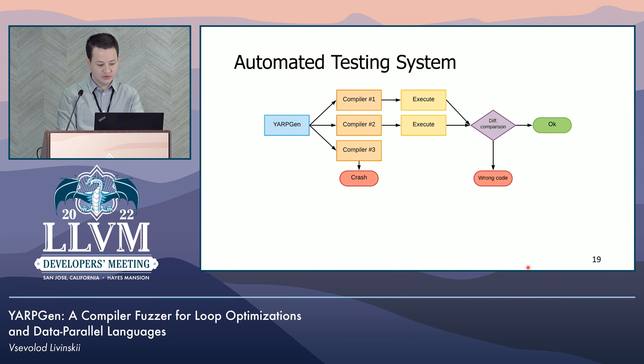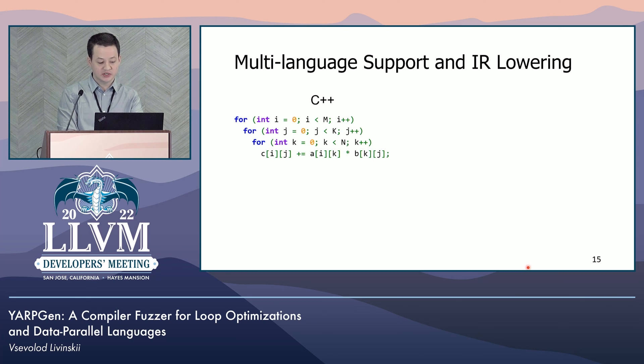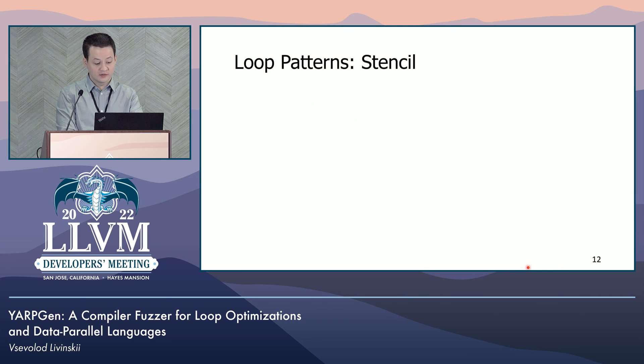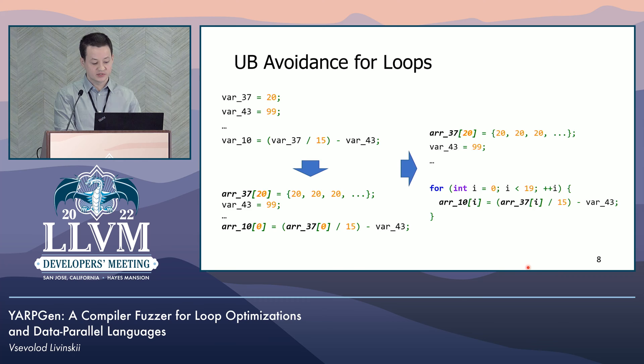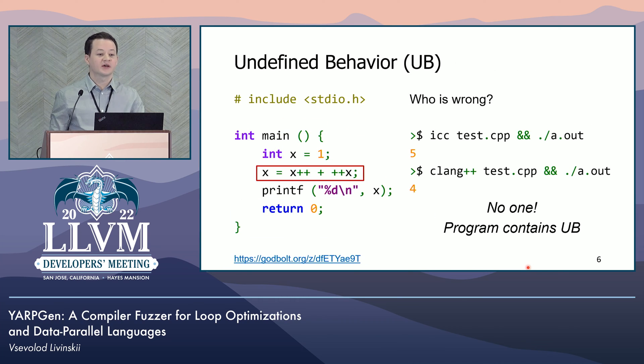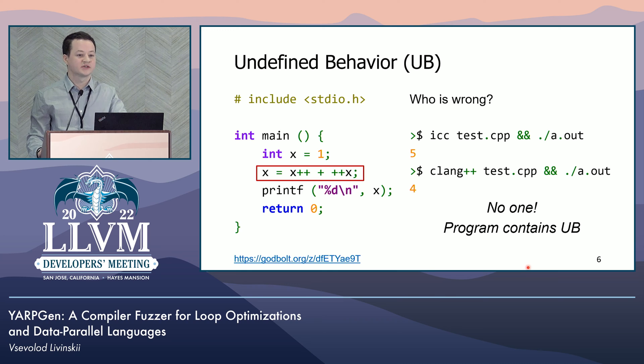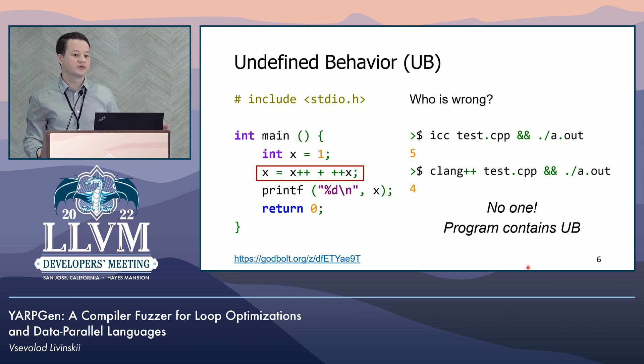Q&A: You have essentially an interpreter of your own IR, which you use to predict operations and detect undefined behavior while you generate. How does it help detect the example on the first slide with i++++i? We do not support increment operations — some undefined behavior features are avoided by construction. We don't have pointer arithmetic, so we don't need to deal with that. Array access undefined behavior is also avoided by construction: we know the iteration space and the size of the array, so we can avoid accessing unallocated memory or memory that doesn't belong to the array.